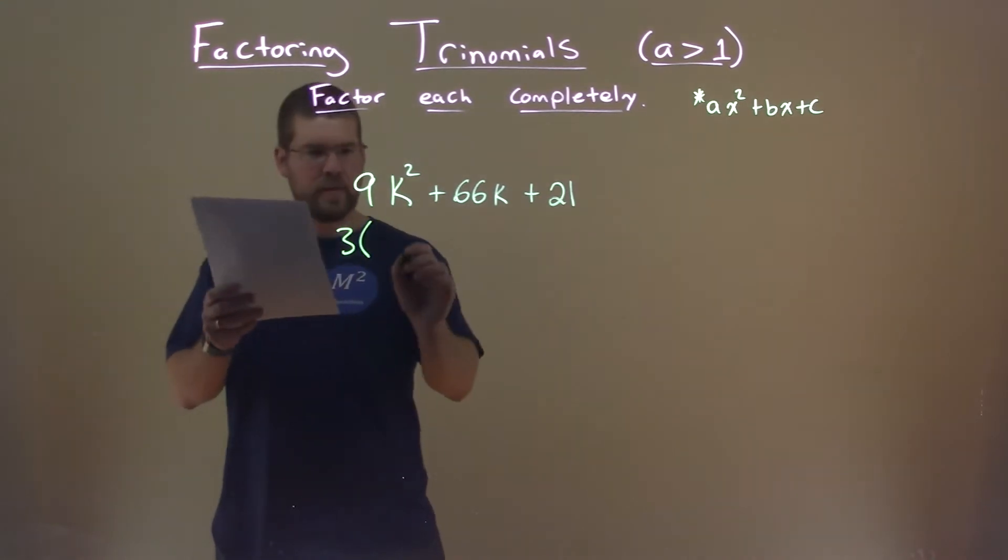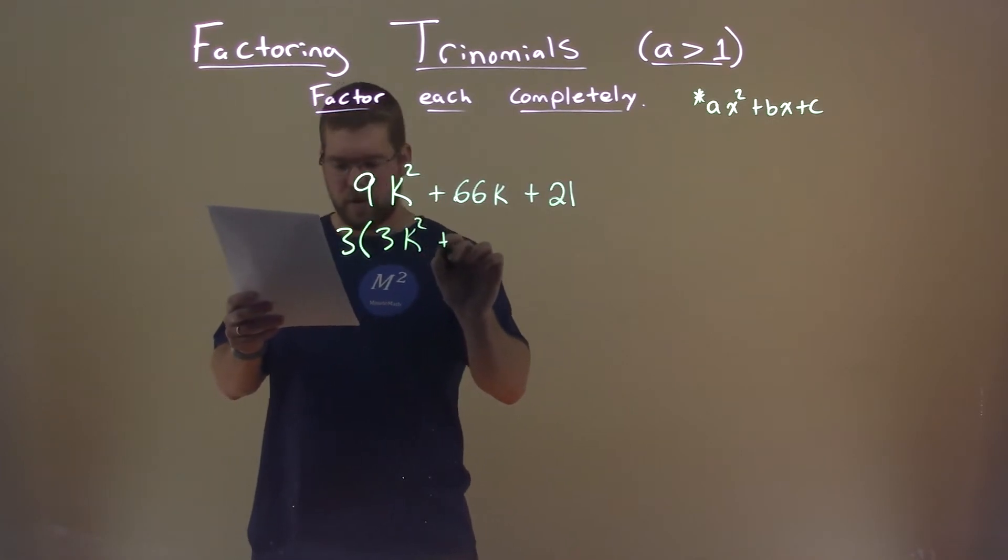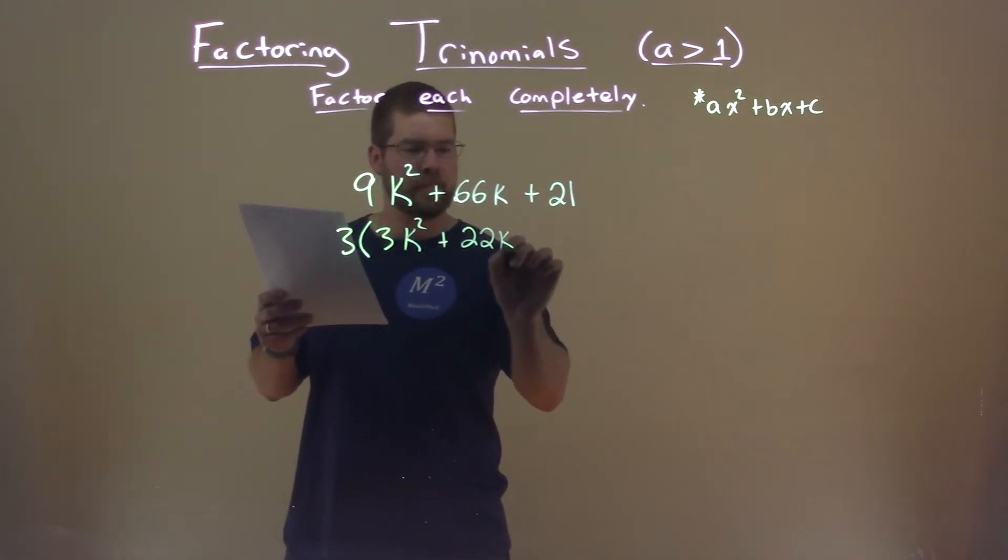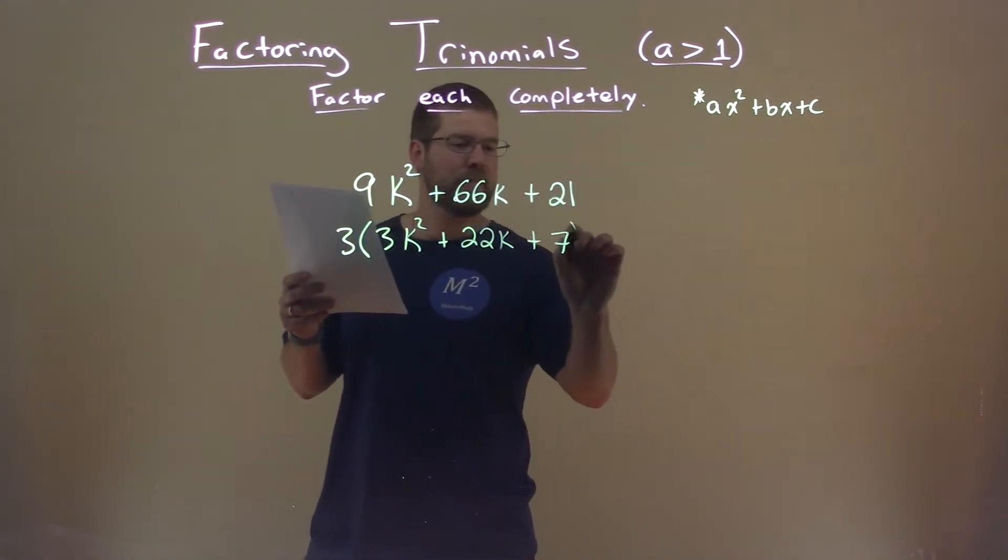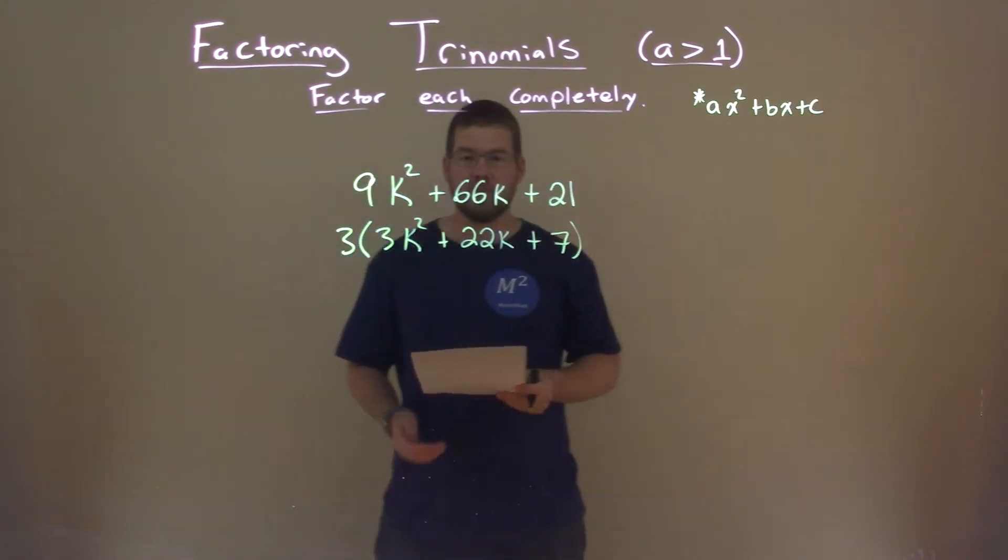So in doing so, if I pull out a 3, I'm going to do a 3 times 3k squared plus 22k plus 7. Now this is a little easier to work with.